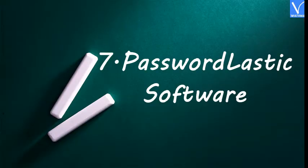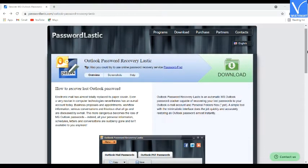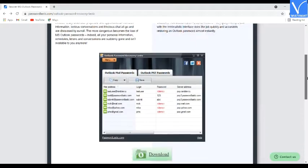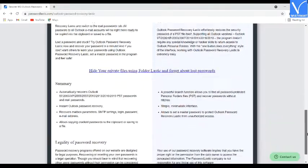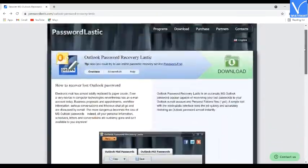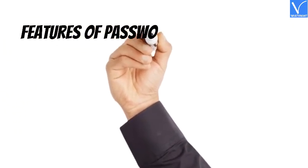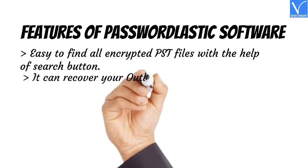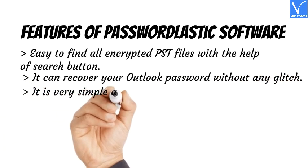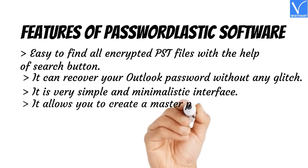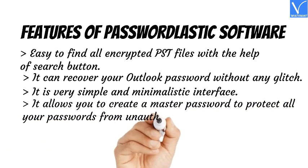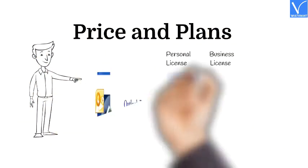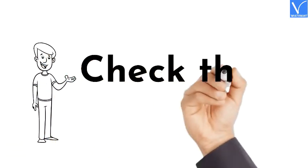Number 7: Password Elastic Software. Password Elastic Software will recover your Outlook password by recovering all your mails and their passwords on your desktop. It recovers passwords for Outlook versions 97, 2000, XP, 2003, 2007, 2010, and 2013. Features: Easy to find all encrypted PST files with the help of a search button. Recovers Outlook passwords without any glitch. Very simple and minimalistic interface. Allows you to create a master password to protect all your passwords from unauthorized access. Doesn't require any special skills. The price and plans are exhibiting on the screen. The product link is provided in the description.